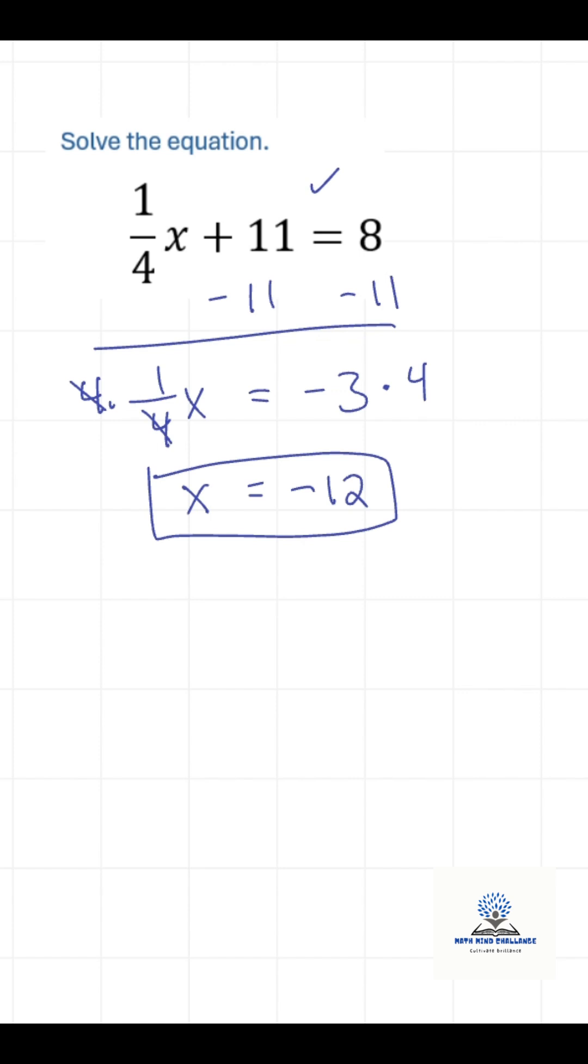The last thing to think about here is sometimes you see this written like 1 fourth times x. This is the same thing as x over 4 plus 11 equals 8. And this x over 4 is a common thing that throws people off. So just having this idea that x over 4 and 1 fourth x are the same thing, just a different way to write it, is a good concept to know.